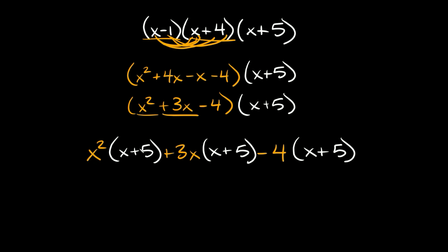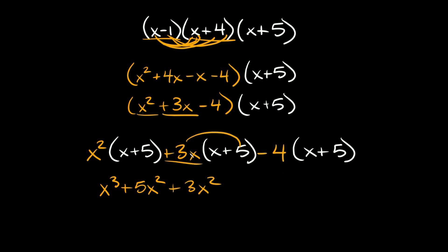Distributing: x squared times x equals x cubed, and x squared times 5 equals positive 5x squared. Then positive 3x times x equals positive 3x squared, and 3x times 5 equals positive 15x. Lastly, negative 4 times x equals negative 4x, and negative 4 times 5 equals negative 20.